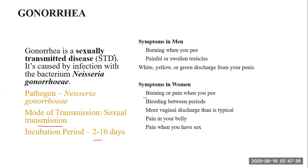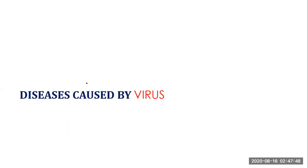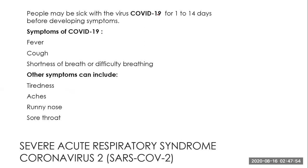Those were diseases caused by bacteria, both foodborne and non-foodborne. Now let's look at other kinds of diseases caused by viruses. The first one is SARS-CoV-2, which is Severe Acute Respiratory Syndrome Coronavirus 2, and the disease is called COVID-19. This is the virus we are mostly affected by and have been suffering from in a pandemic situation. Symptoms include fever, cough, shortness of breathing or difficulty breathing, tiredness, runny nose, and sore throat.